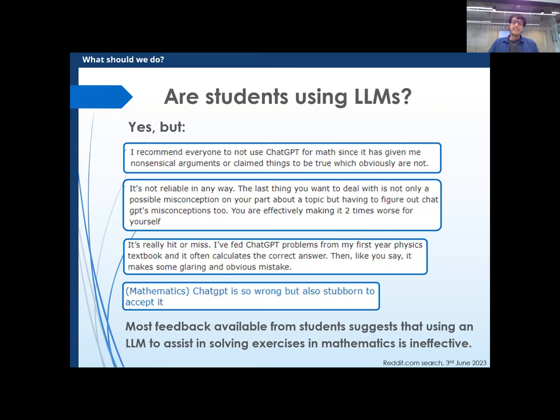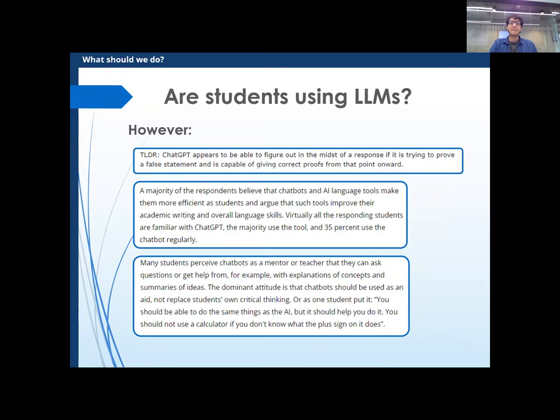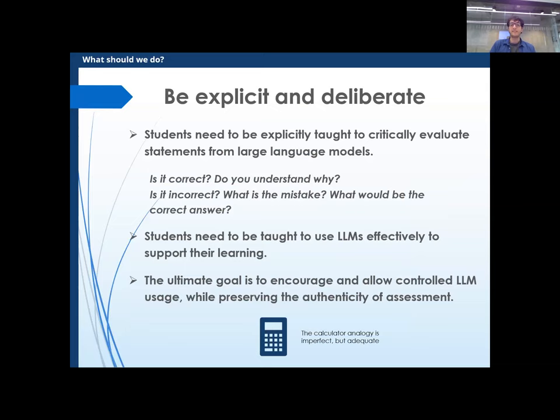However, they've also noticed that most students perceive it as a mentor in some sense. They say you should be able to do the same things as the AI, but it should help you do it — you should not use a calculator if you don't know what 'plus' means. I think that's the right mindset. My suggestion is to be explicit with students: tell them explicitly to be critical, explicitly evaluate statements from large language models. Always ask: is this correct? And if yes, can you actually prove it? Or if it's incorrect, what's the mistake precisely? But they need to be taught this. The ultimate goal is to encourage LLM usage while preserving authentic assessment and critical skills.